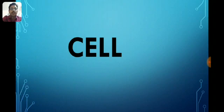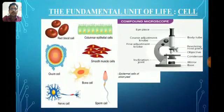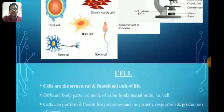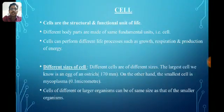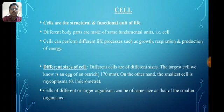On your screen you can see different types of cells and the instrument used to observe these cells in the laboratory. Different body parts are made up of the same fundamental unit, that is the cell. Cells can perform different life processes such as growth, respiration, and production of energy. There are different sizes and shapes of cells.